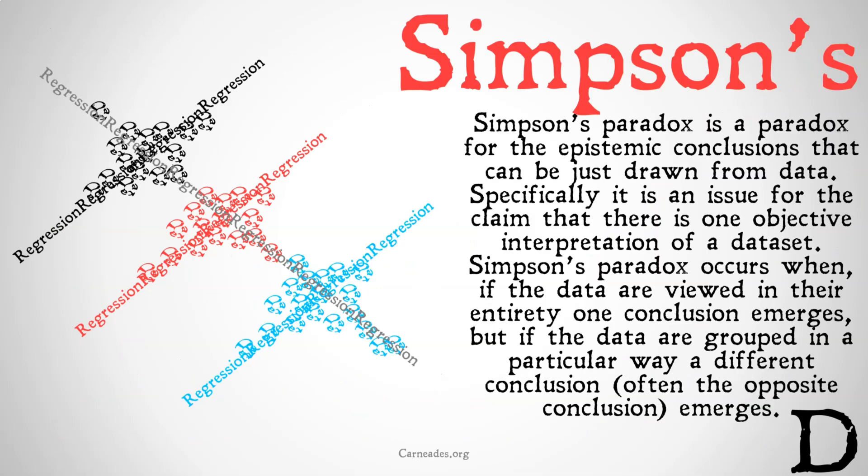Simpson's Paradox is a paradox for the epistemic conclusions that can be drawn from the relationships between particular variables or from a data set. Specifically, it's an issue for the claim that there's one objective interpretation of a data set and that we can know that claim.